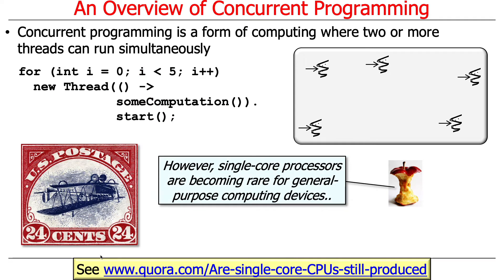It's getting harder and harder to find single-core processors for general-purpose computing devices like laptops, desktops, and servers. Even for smartphones it's hard. If you go into embedded systems you'll still find some single-core processors, but for the general-purpose computing devices we use most of the time they're usually multi-core — single-core processors are as rare as the upside-down airplane stamp.